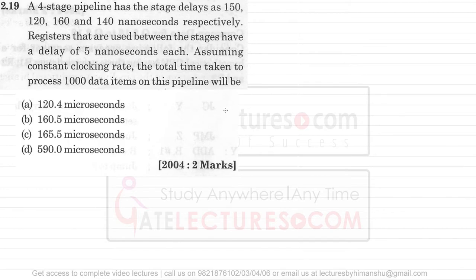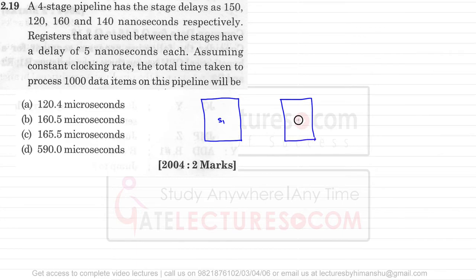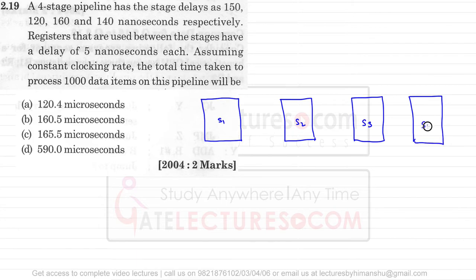We have a four-stage pipeline. The first stage is S1, the second is S2, the third is S3, and the fourth is S4. They give a delay for each stage: S1 has 150 ns, S2 has 120 ns, S3 has 160 ns, and S4 has 140 nanoseconds. Between these stages they use some kind of buffer.